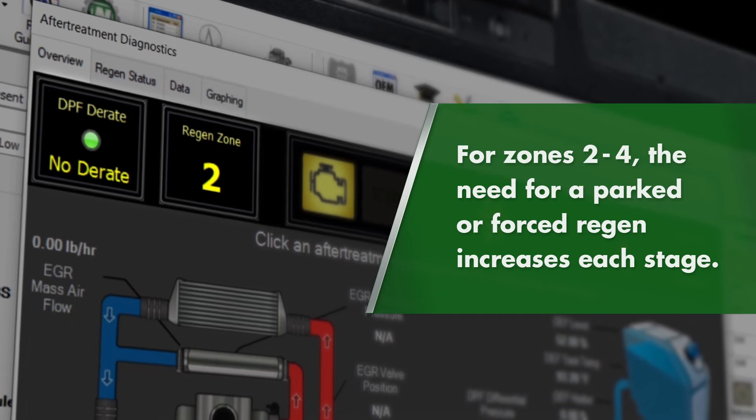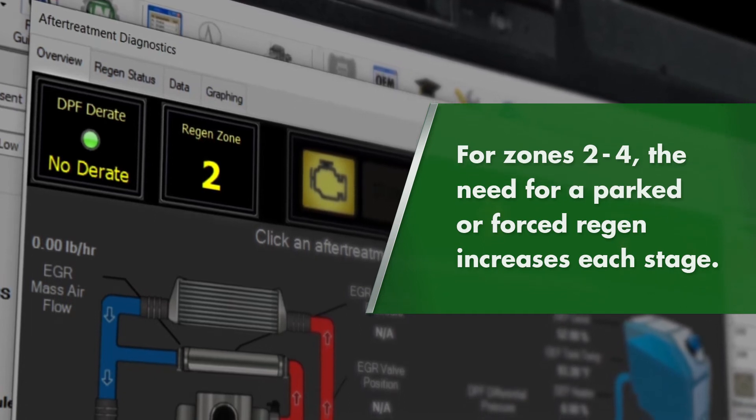For Zones 2 through 4, the need for a parked or forced Regen increases at each stage.